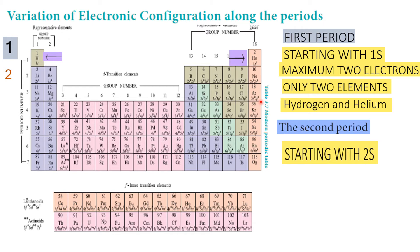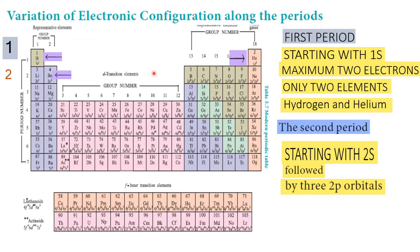The second period starts with the 2s orbital, followed by 2p. The 2p orbital has a maximum of 6 electrons, and 2s has 2 electrons, giving a total of 8 elements in the second period.